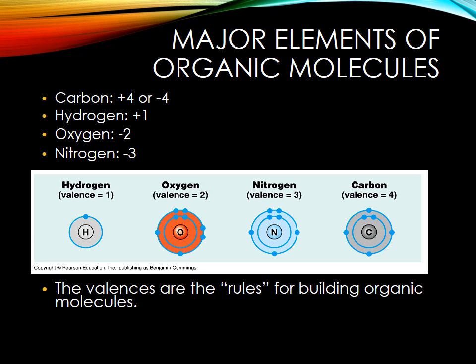Here are the other major elements of an organic molecule, which are carbon, hydrogen, oxygen, and nitrogen. You can see all of them have their valences shown below.